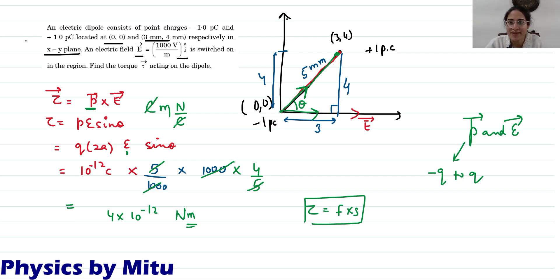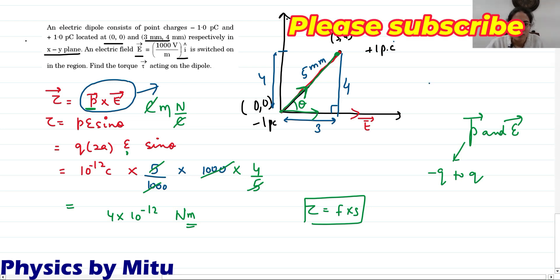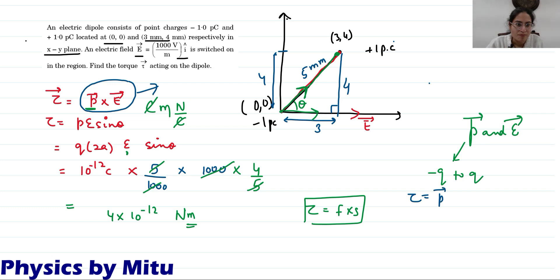If you have to find torque vector, you have to write the direction. How will you find direction? It is cross product of P vector and E vector. You use right hand rule. P cross E direction is in minus Z. And if you don't know how to use right hand rule, then how can we do it?